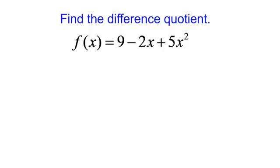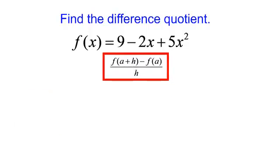Find the difference quotient. We have the function f at x is equal to 9 minus 2x plus 5x squared. The difference quotient is f at a plus h minus f at a, all of that divided by h. Let's get to work.